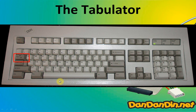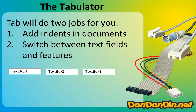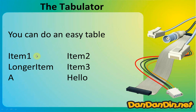The Tab key will let you move between text fields. Press Tab and you jump to the next field, press Tab again and you move to the next one — very easy. If you have a form to fill out, just press Tab, Tab, Tab. You can also make a simple table: just write item 1, then Tab, item 2, Enter, longer item, Tab, item 3.